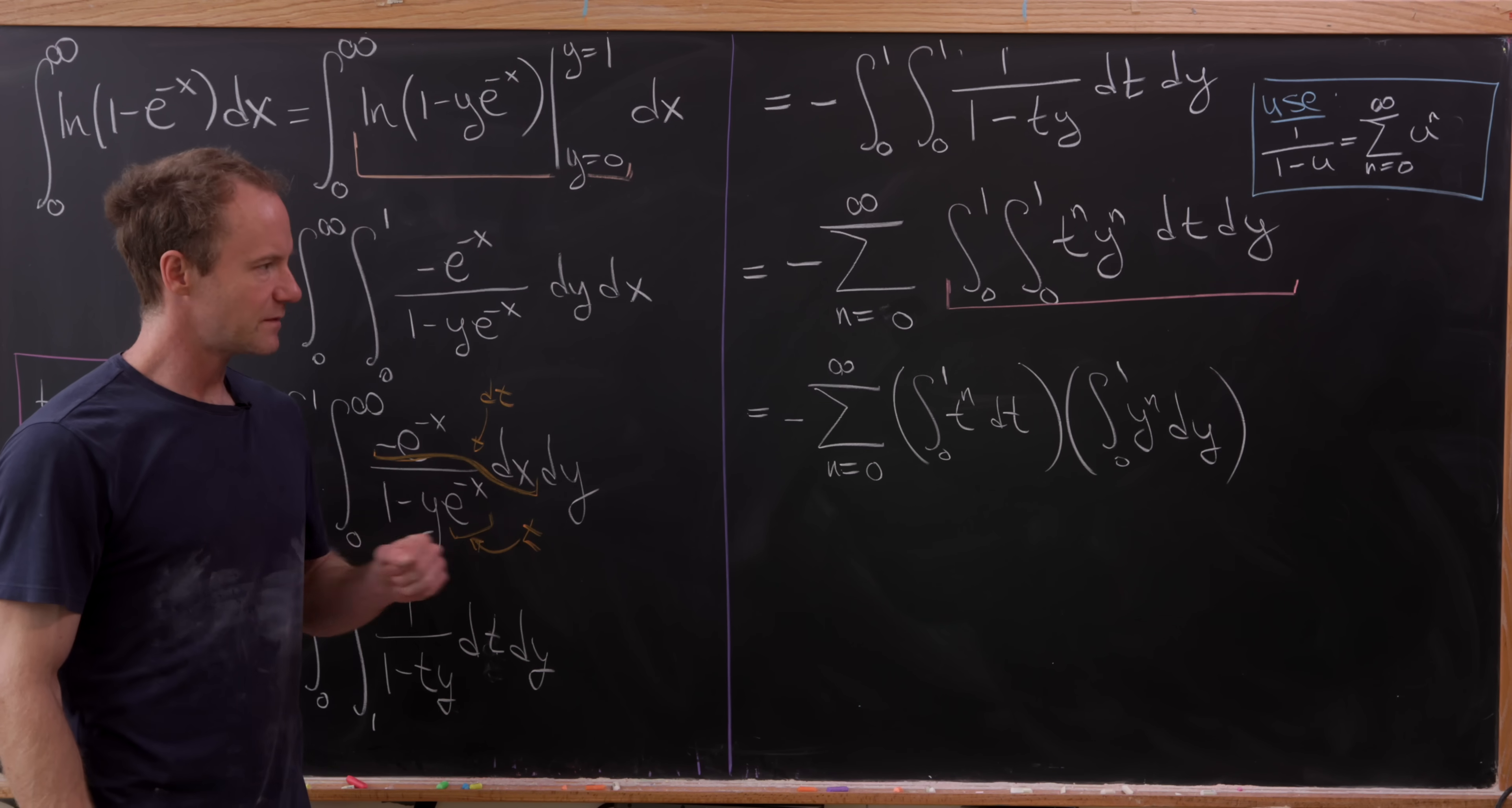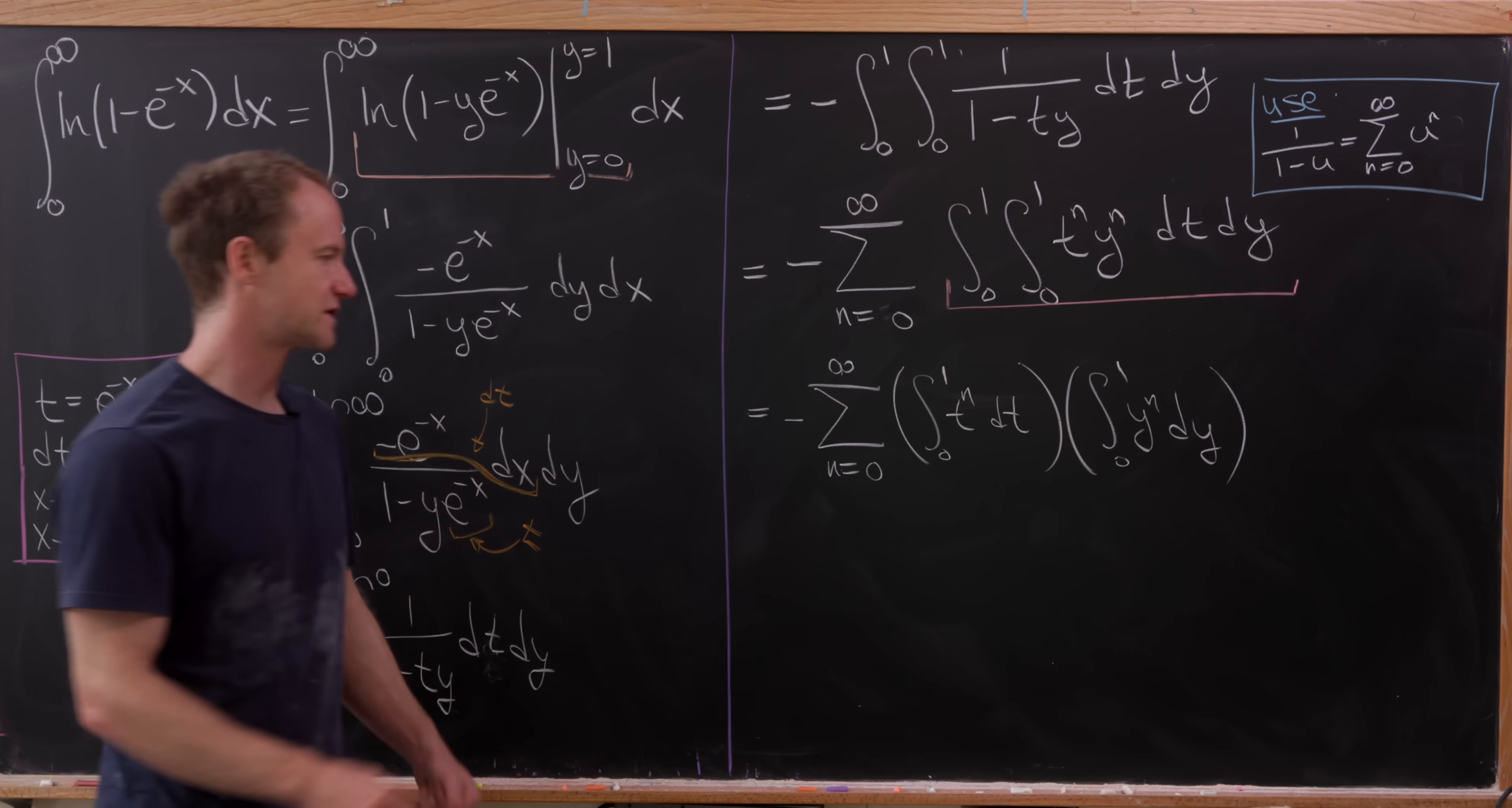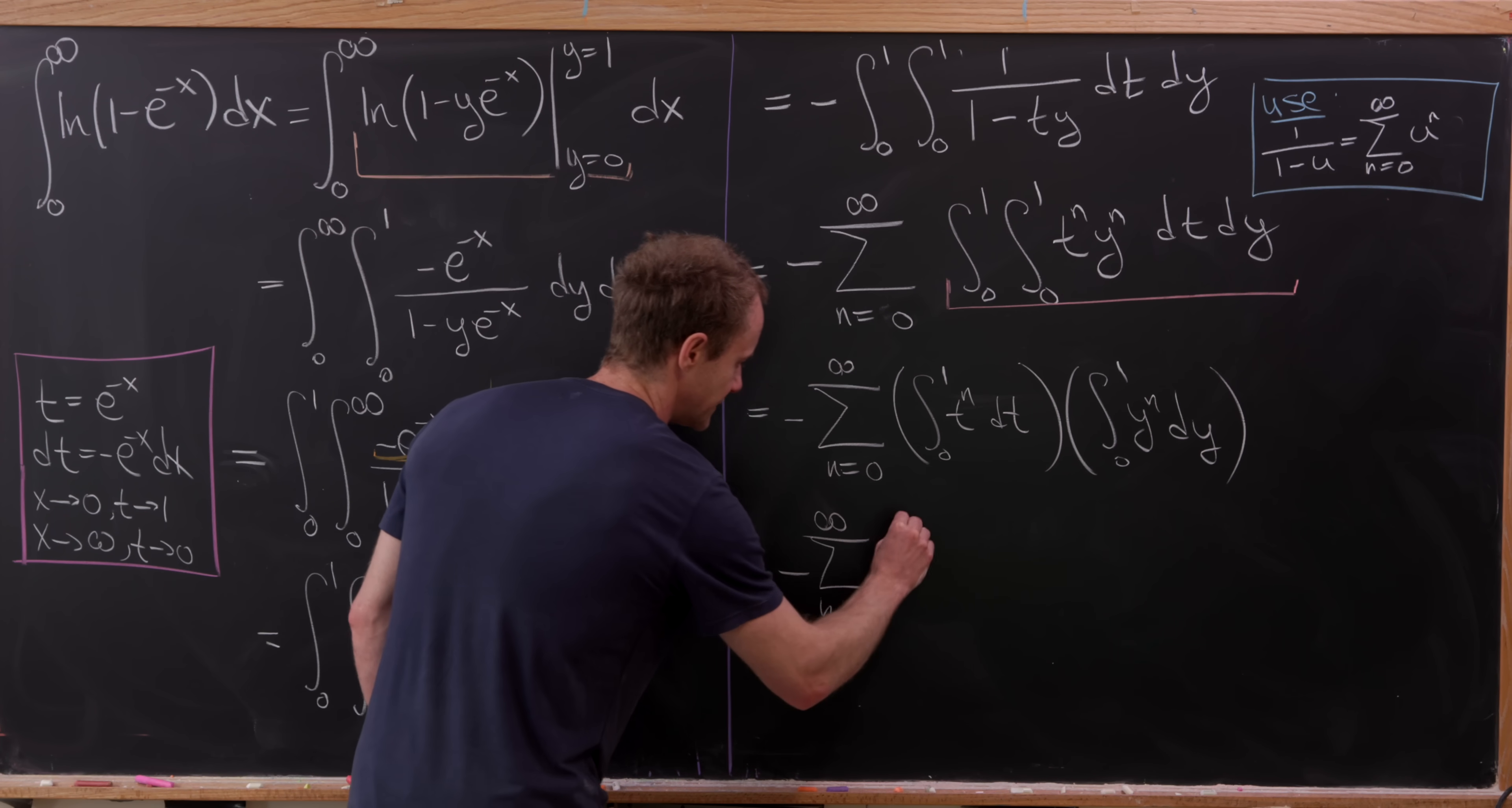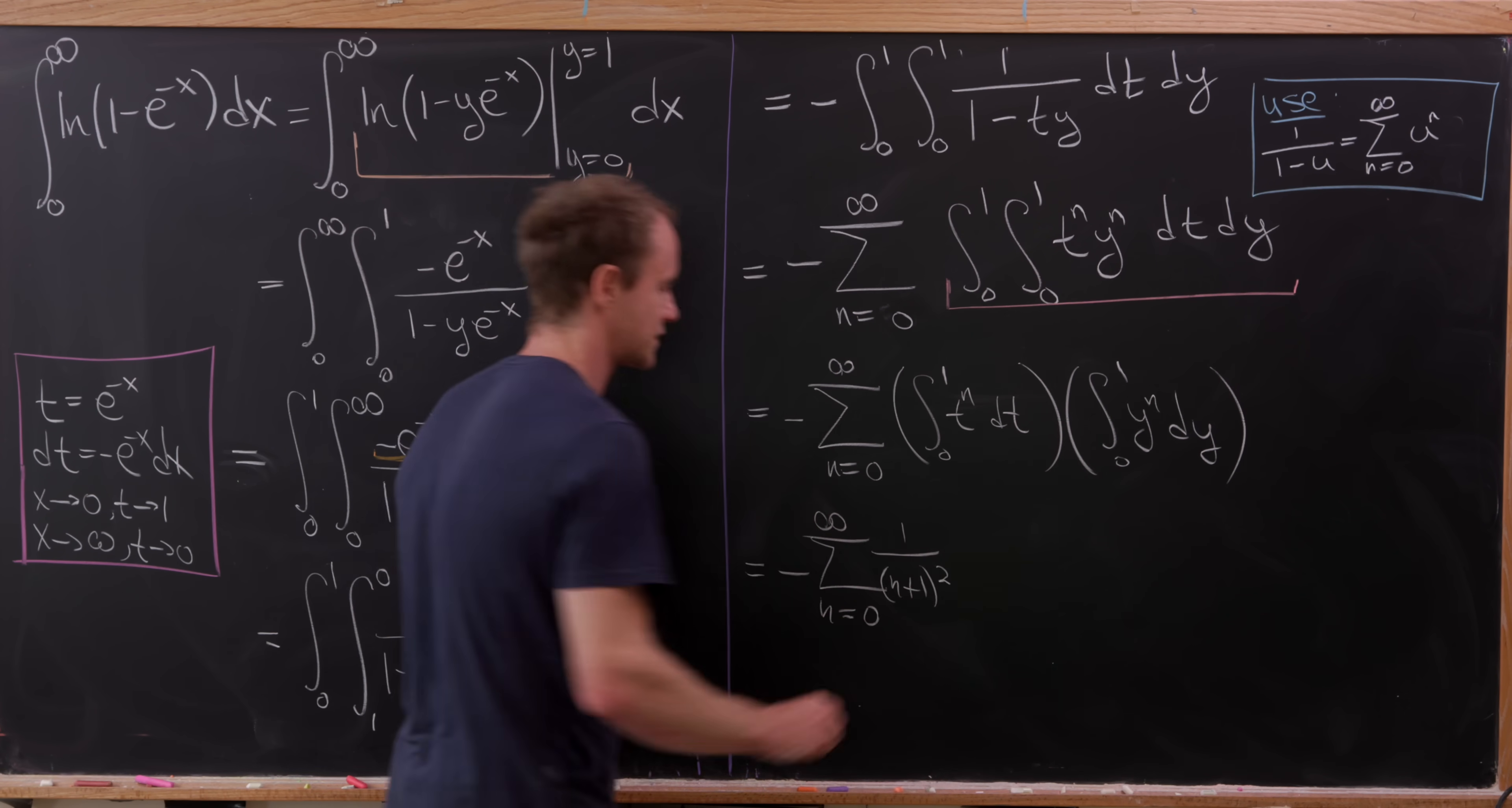But next up, those anti-derivatives and evaluations are very simple to do. And you'll see we get minus the sum as n goes from zero to infinity of one over n plus one quantity squared.